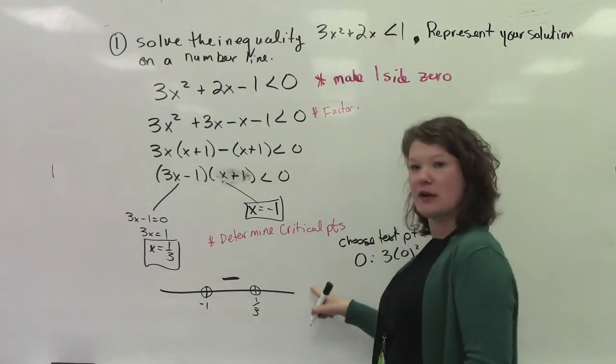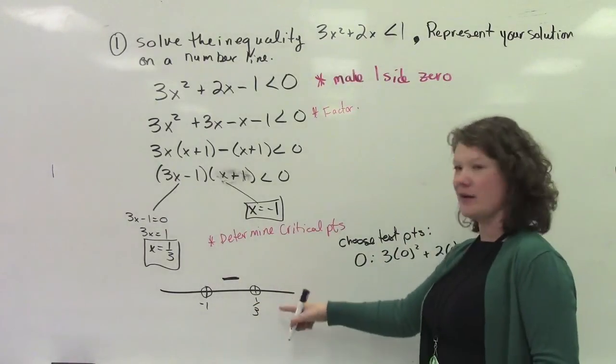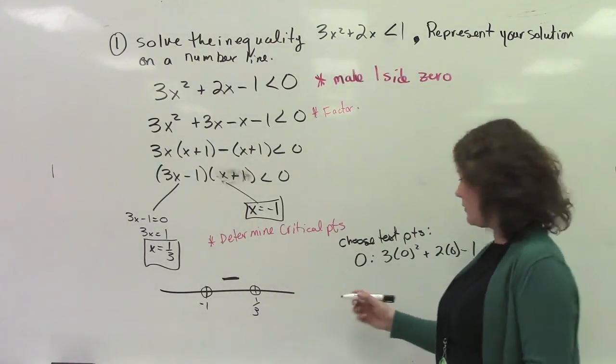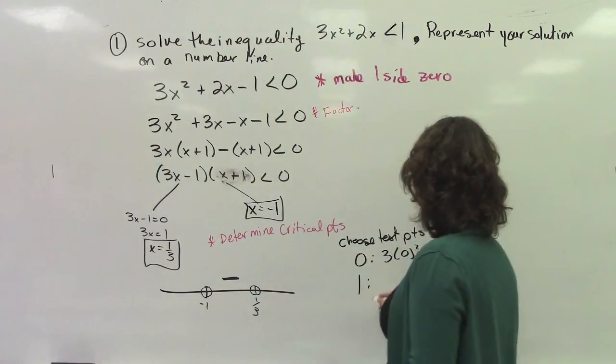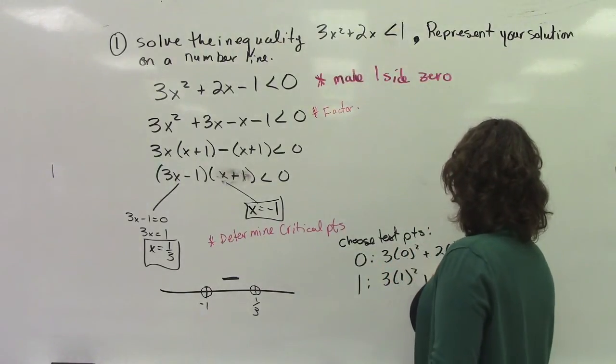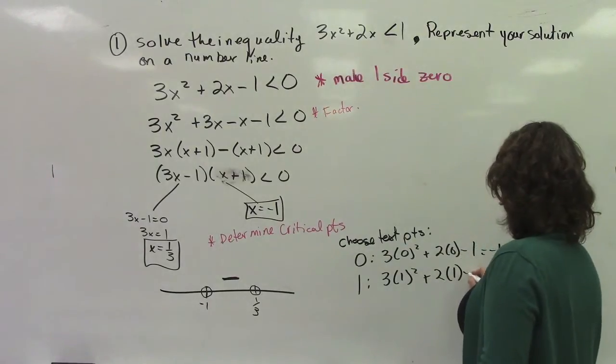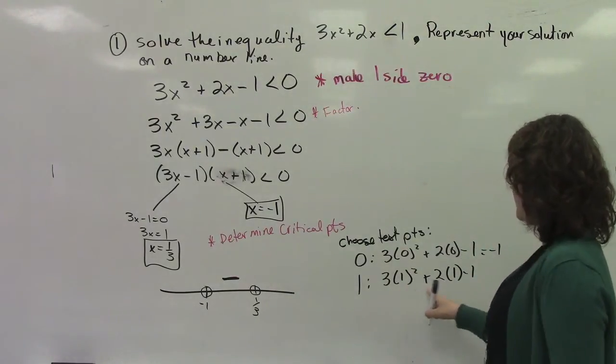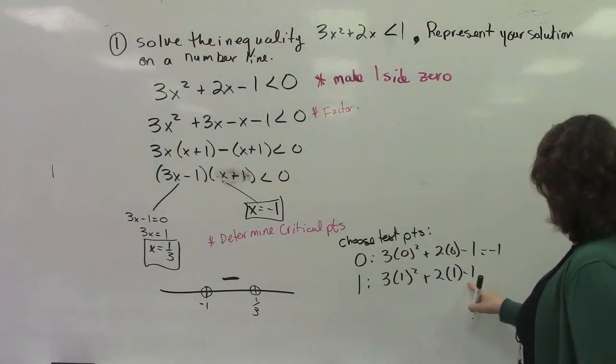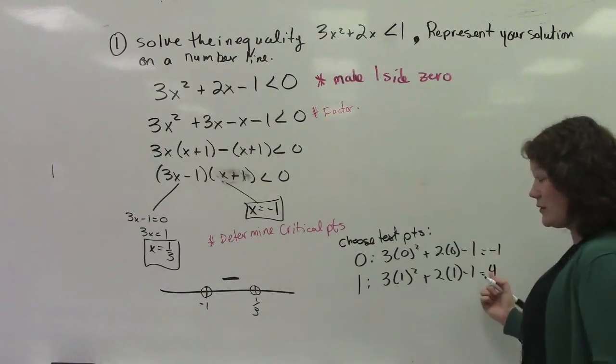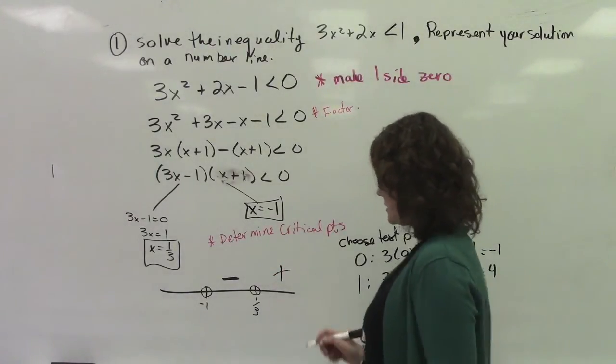I'm going to choose a test point on this section right here. The easiest one for me would be 1. So 3 times 1 squared plus 2 times 1 minus 1. 3 plus 2 is 5 minus 1 is 4. So we know that it's positive.